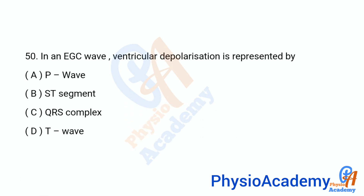Question number 50: In an ECG, ventricular depolarization is represented by — option A: P wave, option B: ST segment, option C: QRS complex, option D: T wave. The correct answer is option C: QRS complex.